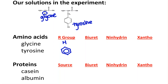So biuret — what does the biuret test for? It tests for a peptide bond. A peptide bond occurs between two amino acids in a protein. So if you don't have peptide bonds, you don't have a protein, and these will both test negative. They're just individual amino acids.